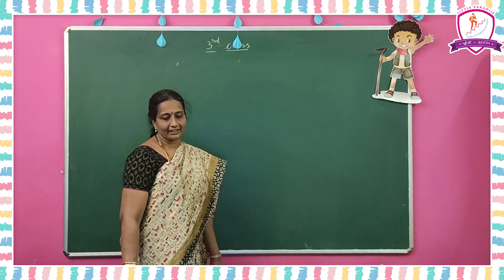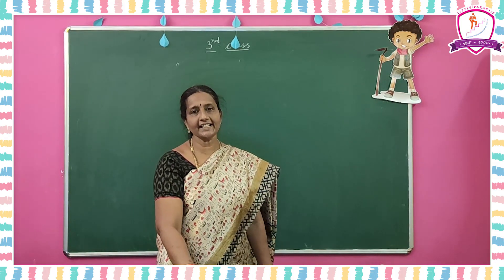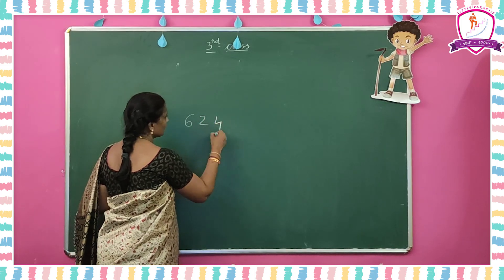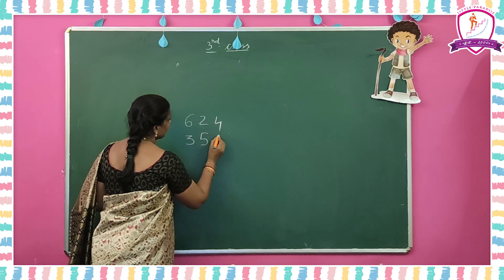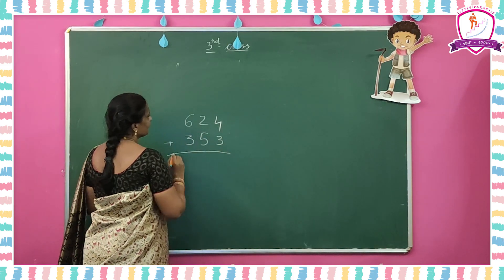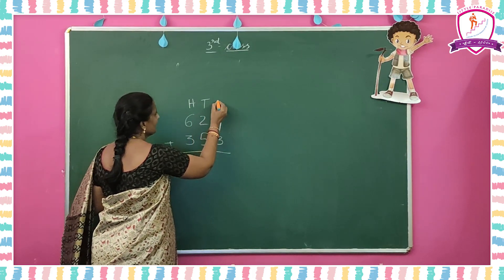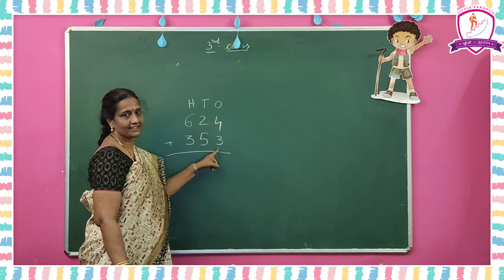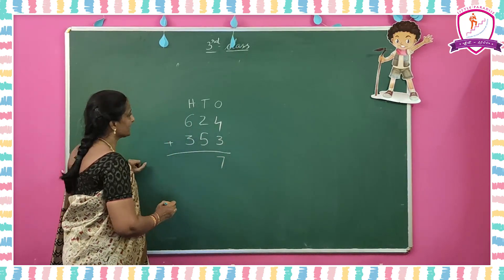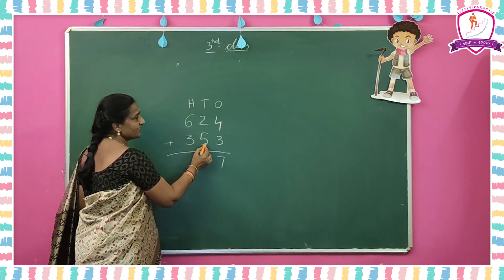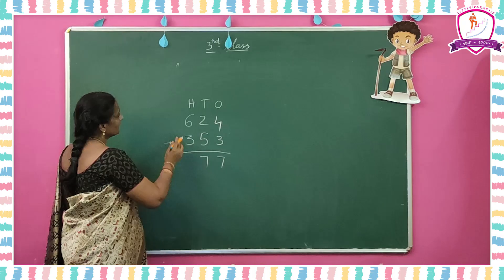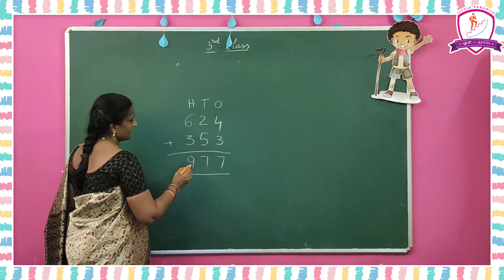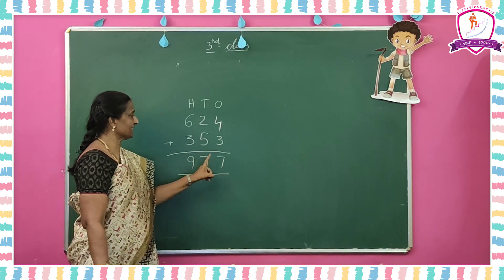Come to checkpoint one. The first sum is six hundred and twenty-four plus three hundred and fifty-three. Add these two numbers. Write the places: hundreds, tens, ones. Ones place: 4 ones plus 3 ones is 7 — write 7 directly. Tens place: 2 tens plus 5 tens is 7 — write 7 directly. Hundreds place: 6 plus 3 is 9. The answer is nine hundred and seventy-seven — 9 hundreds, 7 tens, 7 ones.